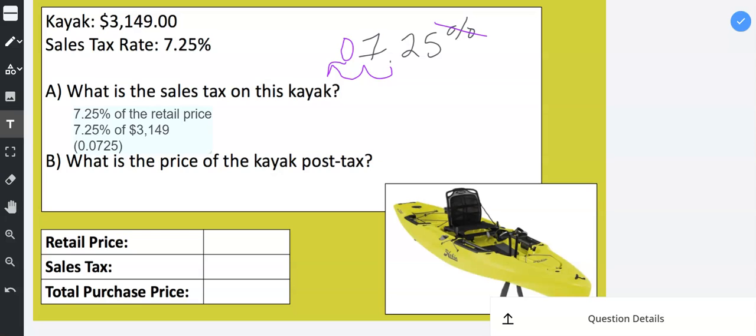And then instead of the word of, of in math means multiplication so I'm going to write a multiplication sign. And then I write the 3,149. And when I multiply those two together that will give me the sales tax.